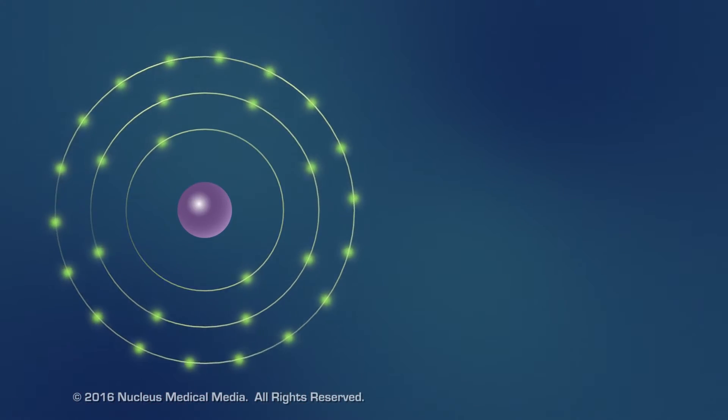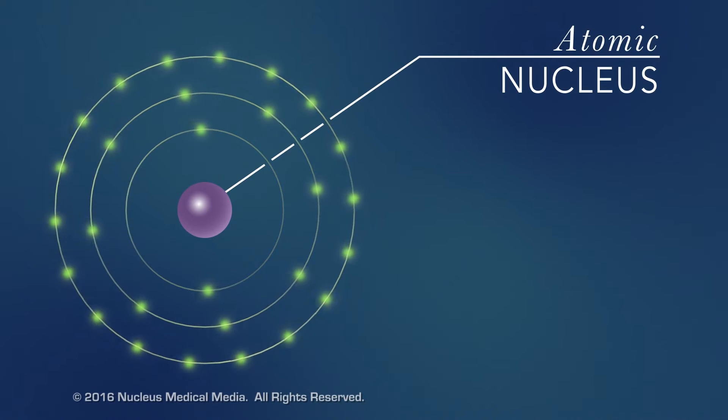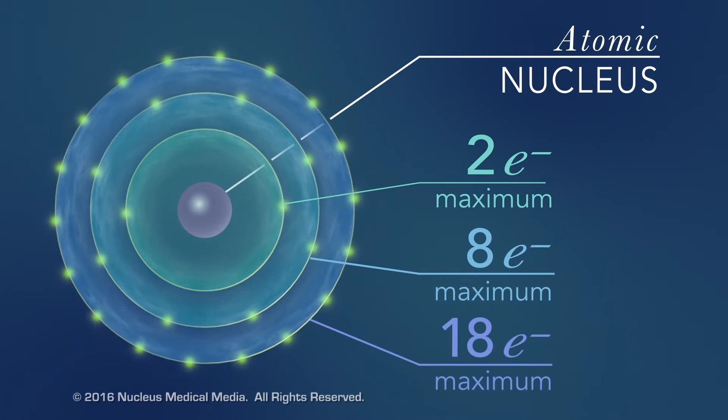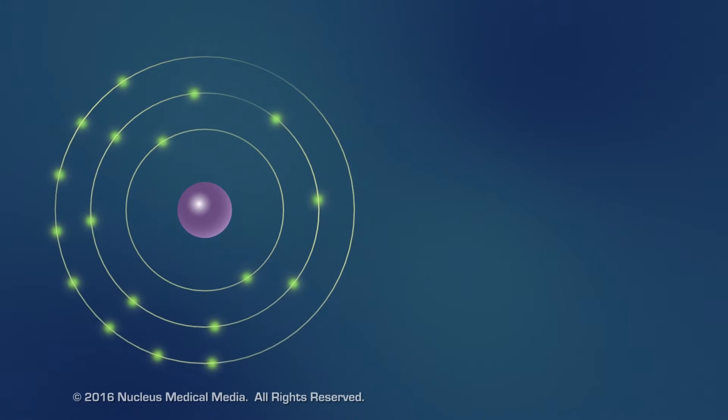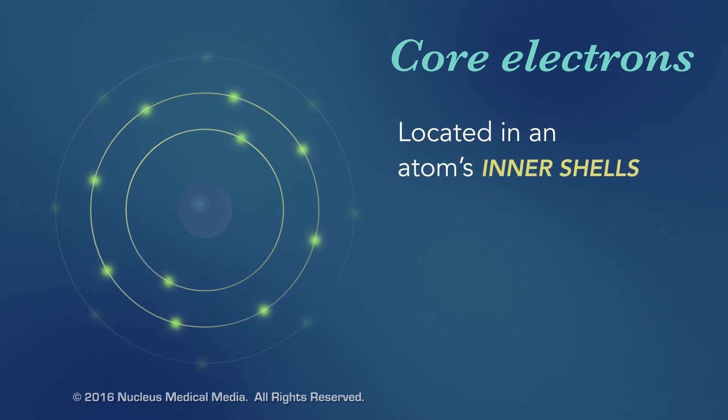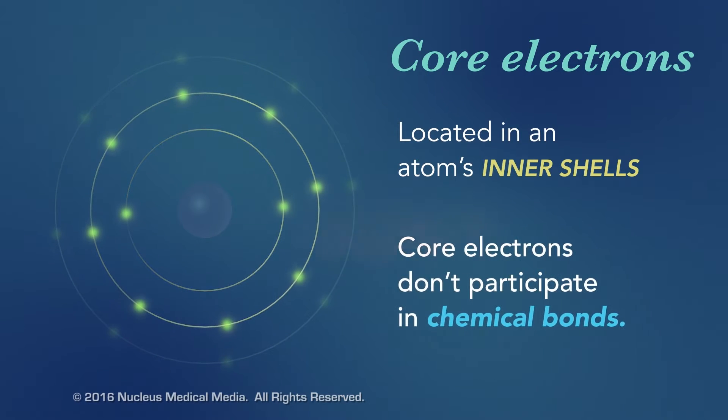Recall that electrons in an atom surround the nucleus. They fill energy levels or shells in specific numbers. Electrons in an atom's inner shells are commonly referred to as core electrons. Core electrons don't participate in chemical bonds.